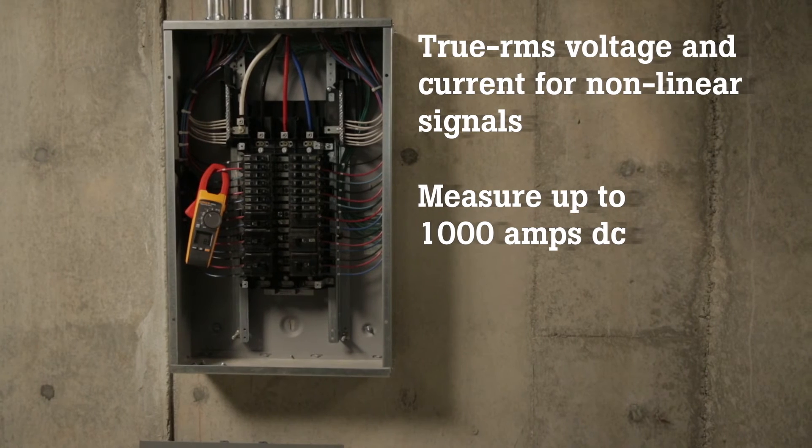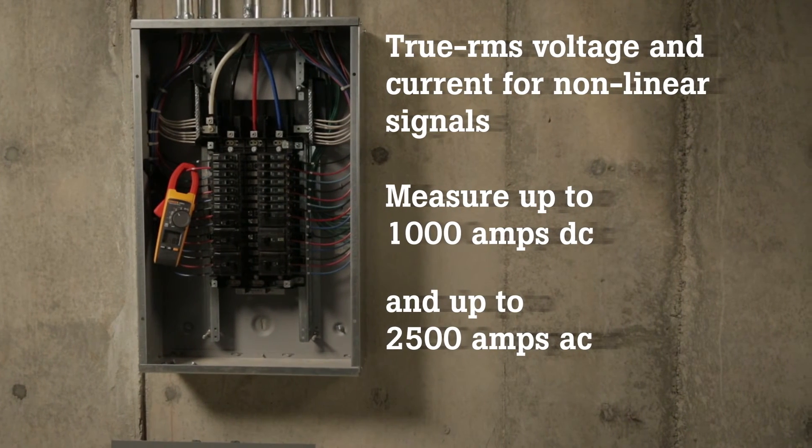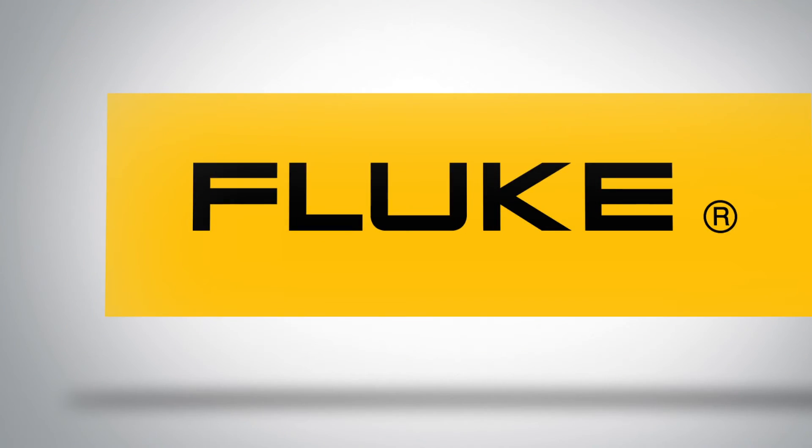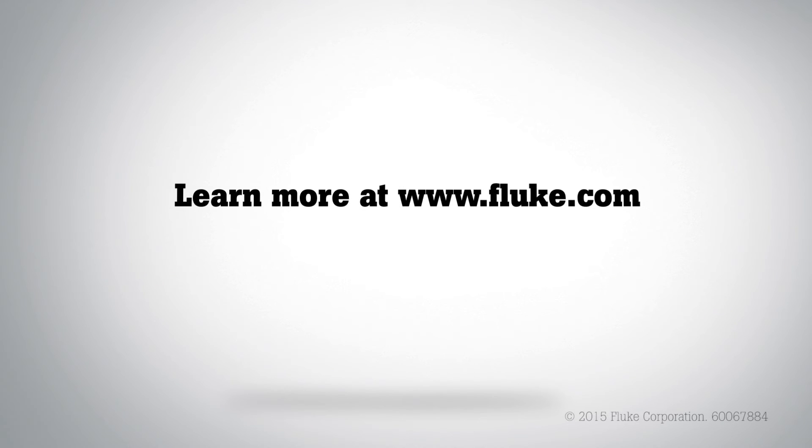Measure up to 1000 Amps DC and up to 2500 Amps AC. Learn more about the Fluke 376 clamp meters. Visit Fluke.com.